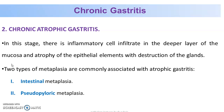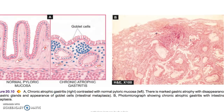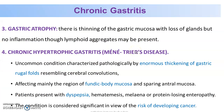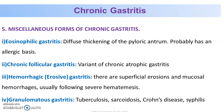In chronic atrophic gastritis, inflammation is marked with atrophy of the glands, linked to two types of metaplasia: intestinal metaplasia and pseudopyloric metaplasia. Chronic hypertrophic gastritis, also called Menetrier's disease, affects mainly the fundic body mucosa and patients present with dyspepsia, hematemesis, melena, or protein-losing enteropathies. Miscellaneous forms of chronic gastritis include eosinophilic gastritis, chronic follicular gastritis, hemorrhagic erosive gastritis, and granulomatous gastritis.